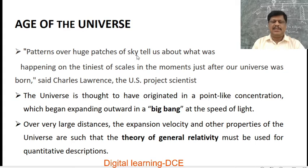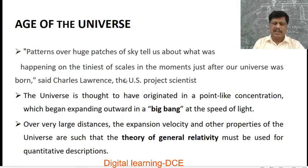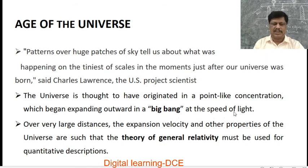Patterns from huge patches of the sky tell us about what was happening on the tiniest of scales in the moments just after our universe was born, said Charles Lawrence, the U.S. project scientist. The universe is thought to have originated in a point-like concentration which began expanding outward in a Big Bang at the speed of light. Over very large distances, the expansion velocity and other properties of the universe are such that the theory of general relativity must be used for quantitative descriptions.